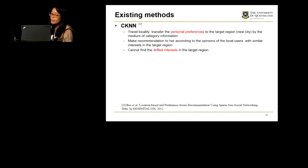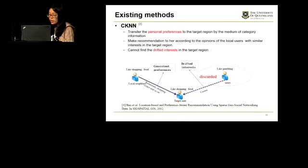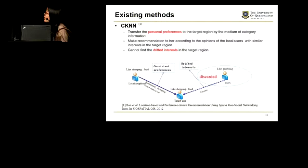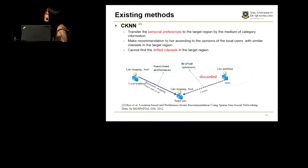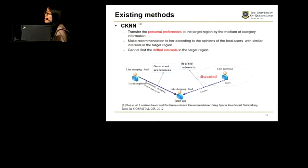However, the drawback of this method is that it cannot find the drifted interests in the target region. For example, we have a target user, and according to the category information of the spatial items she has visited, we find that this user likes shopping or food. Now she travels to Las Vegas and maybe she wants to visit a casino. But according to the CKN method, it will still find local users in Las Vegas who also like shopping and food, and will still recommend restaurants or shopping centers to this target user. So this drifted part of interest is discarded in this method.